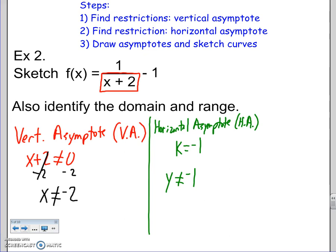Alright, next, draw the asymptote and sketch the curves. So this is the easy part. Draw our graph. Let's do the vertical asymptote. So that's up and down. x cannot be negative 2. So let's call this negative 2 right here. Alright, let's call that negative 2. That's the asymptote.